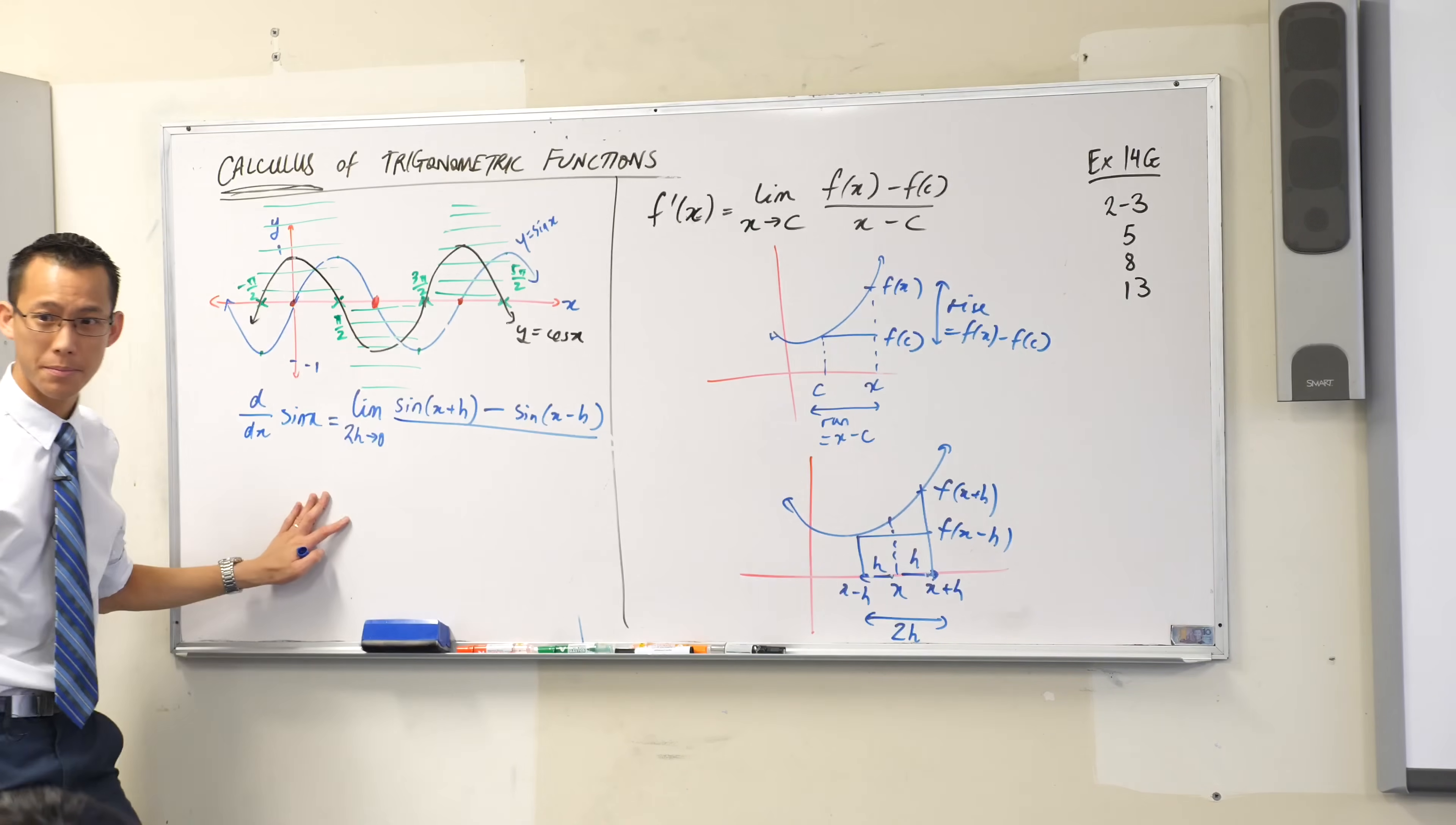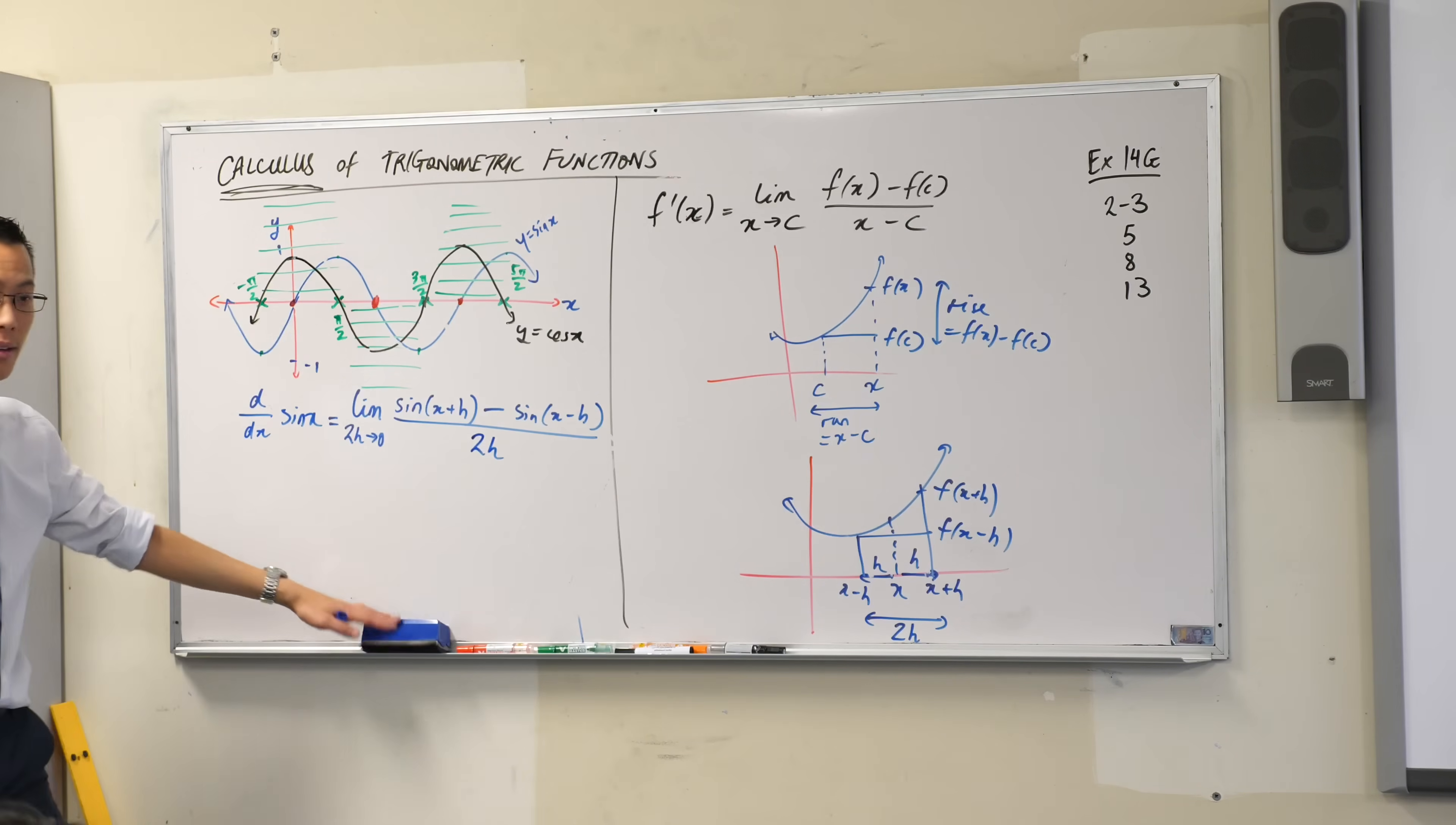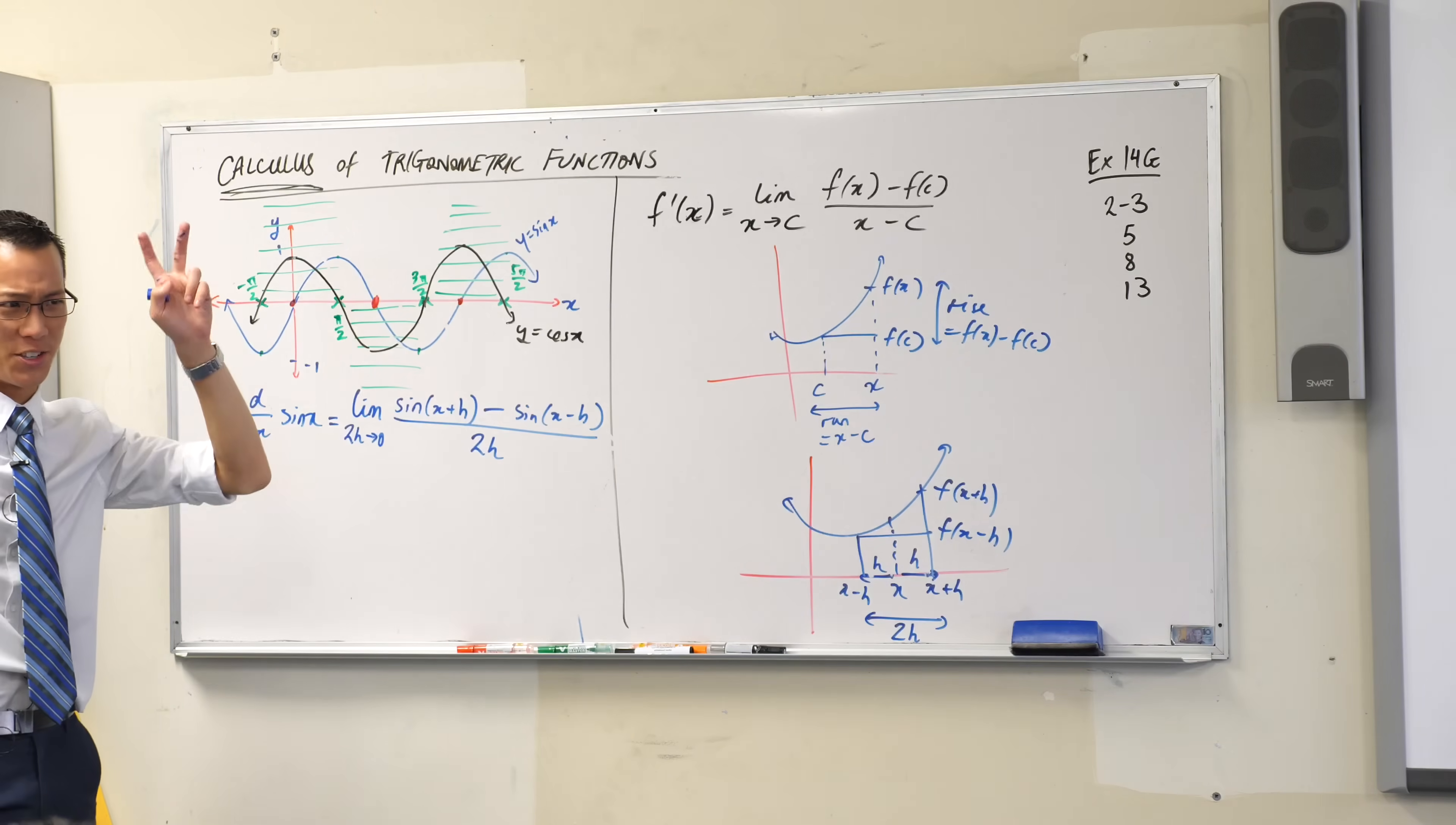What's the run? It's going to be 2h. We already worked that out. Now, can you see yet? Do you see why I made this strangely complicated?